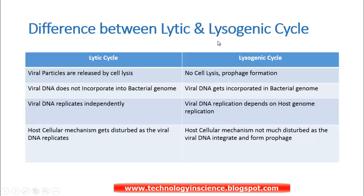Let's look at the differences between the Lytic and Lysogenic cycles. First, viral particles are released by cell lysis in the Lytic cycle, whereas in the Lysogenic cycle there is no cell lysis — only prophage formation, as the phage remains dormant. Second, the viral DNA does not incorporate into the bacterial genome in the Lytic cycle; instead it remains independent and replicates independently.